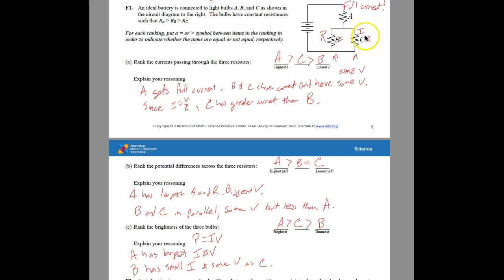The resistances are: A has the biggest resistance, followed by B, followed by C. They want us to rank the currents through the three resistors. Since this one is in series, it gets the full current, so that one is obviously the biggest.